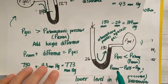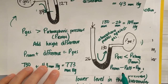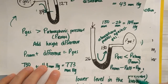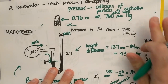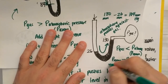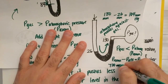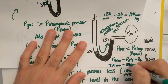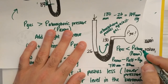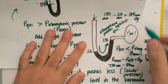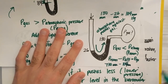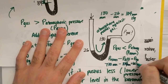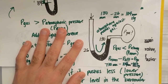I subtract because the pressure of the gas should be lower than atmospheric pressure. The pressure of the room was given as 730 millimeters of mercury. So: 730 millimeters minus 104 millimeters equals 626 millimeters of mercury.